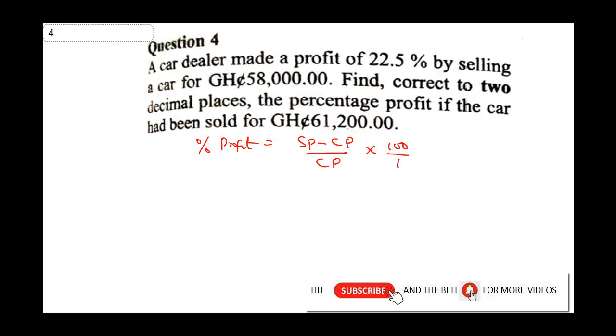Let's analyze the question. Notice that the percentage profit was given as 22.5% and the selling price was given as 58,000. For us to be able to proceed, we need to get our cost price. So let our cost price be X. Percentage profit 22.5% is equal to our selling price 58,000 minus X, which is our cost price, all over X times 100 over 1.